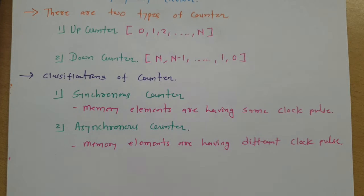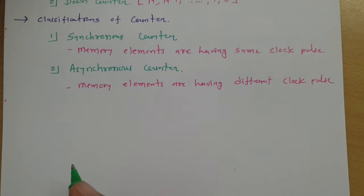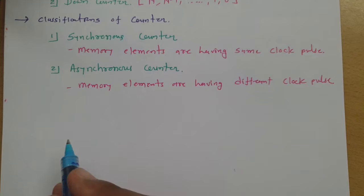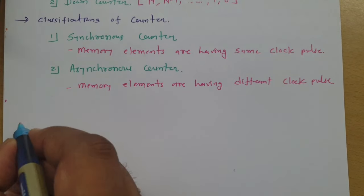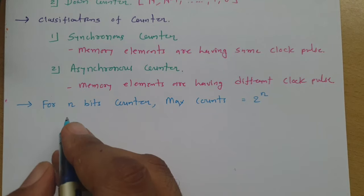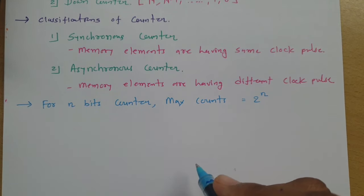Now I will explain some basics regarding counters. In a counter, we need to define the number of elements, and that number is determined based on the count. If I have n number of elements, then the maximum count will be 2 to the power n. So the total number of counts is based on the number of memory elements used, and the count will start from 0 and go up to 2 to the power n minus 1.